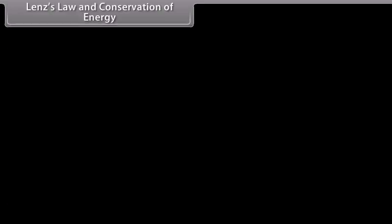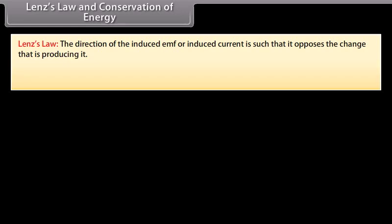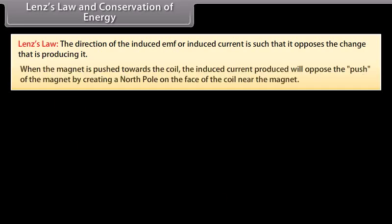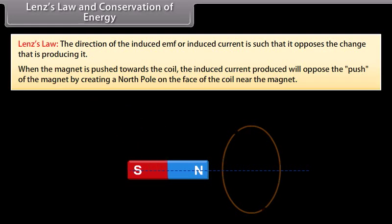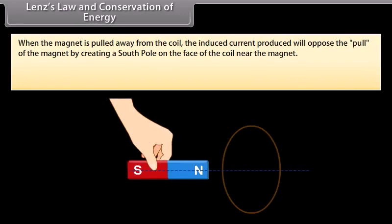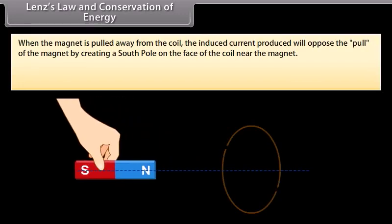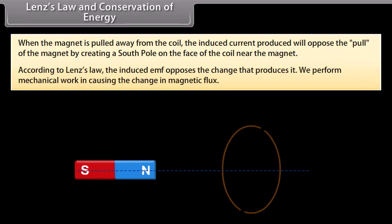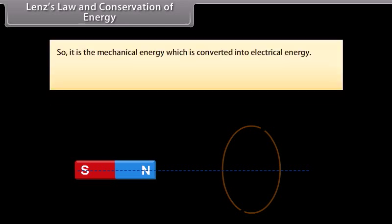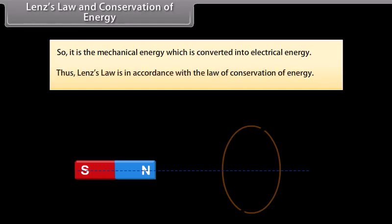Lenz's law and conservation of energy. Lenz's law states that the direction of the induced EMF or induced current is such that it opposes the change that is producing it. When the magnet is pushed towards the coil, the induced current opposes the push by creating a north pole on the face of the coil near the magnet. When the magnet is pulled away, the induced current opposes the pull by creating a south pole. We perform mechanical work in causing the change in magnetic flux, so mechanical energy is converted into electrical energy. Thus, Lenz's law is in accordance with the law of conservation of energy.